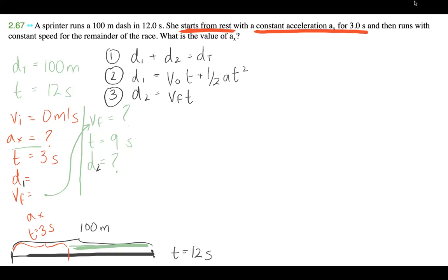And what we can do is we can rewrite equation one with equation two and three. So we know that v0 t, which is actually zero, is half of ax t squared, t1 squared. Let's just label that to make it more clear. Plus vf t2 is equal to 100. We can sub in values for t1 and t2, but we still don't know what ax and vf are. So we need another equation.